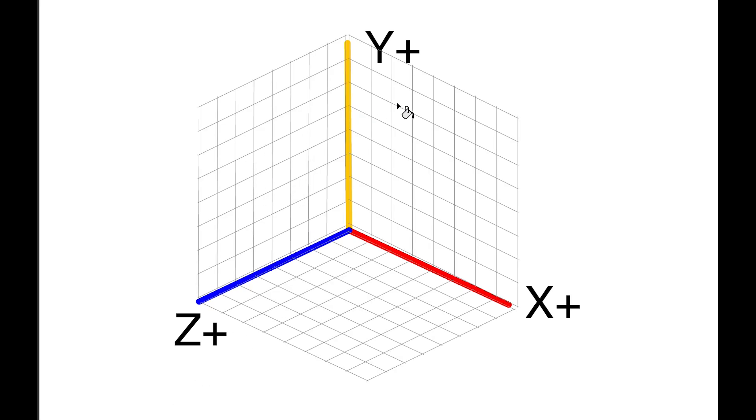If we put some numbers to this by adding a grid, we can define a point—an individual point—where its position is 5 along the X axis, 4 up the Y axis, and 3 along the Z axis. So we can define that point: X is 5, Y is 4, Z is 3.